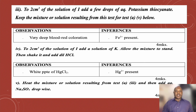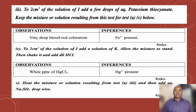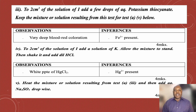Moving to the third section, Test A3: to 2 cm³ of the solution of I, add a few drops of aqueous potassium thiocyanate. Keep the resulting mixture for Test A5 below. I did that and observed a very deep blood red coloration. On my inference, Fe³⁺ ion is confirmed present.